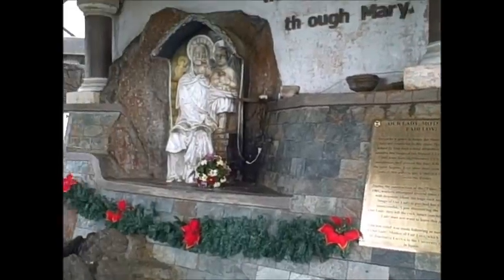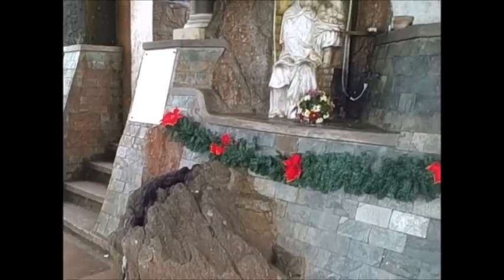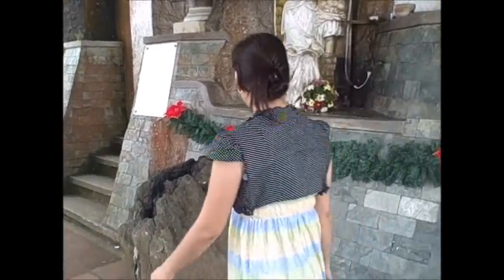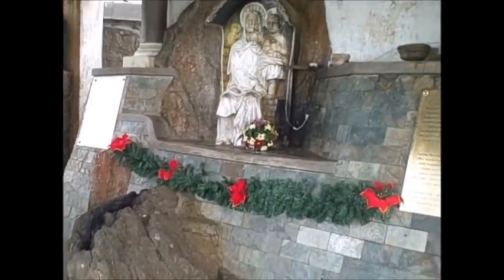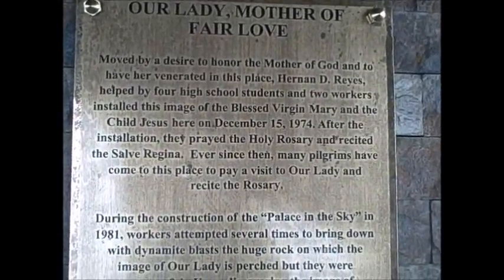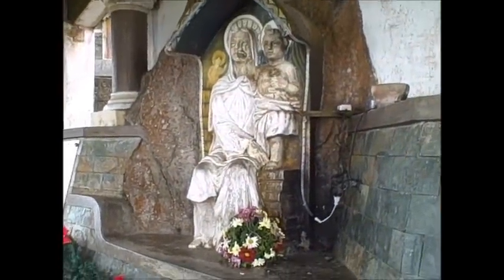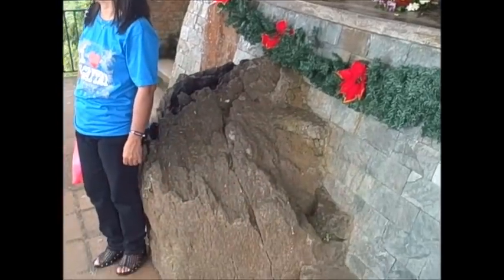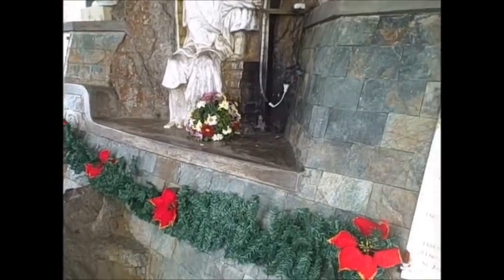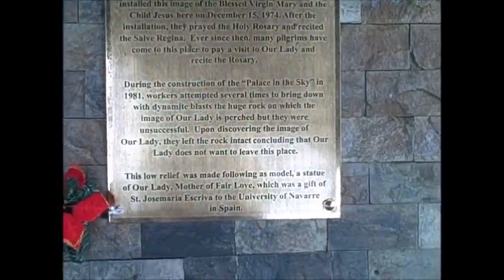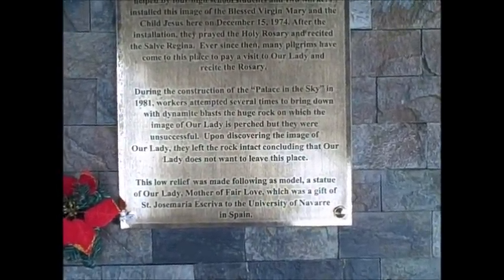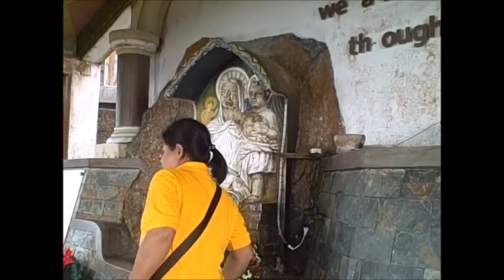There's a shrine dedicated to the Virgin Mary. It was here in existence before the palace was built. On building the palace they tried to remove it with dynamite, but they tried in vain. So what they've done is they've built a shrine. There are a couple of plaques here which tell you the story. On the 15th of December 1974, the prayer of the rosary was installed here. On trying to complete the palace and remove the rocks, they were unable to do so. It says: 'Upon discovering the image of Our Lady, we left the rock intact, concluding that Our Lady does not want to leave this place.' So it's a shrine to the Virgin Mary and the baby Jesus.